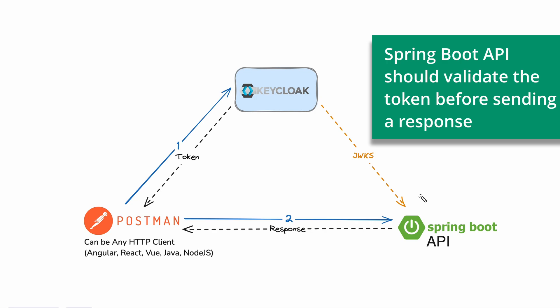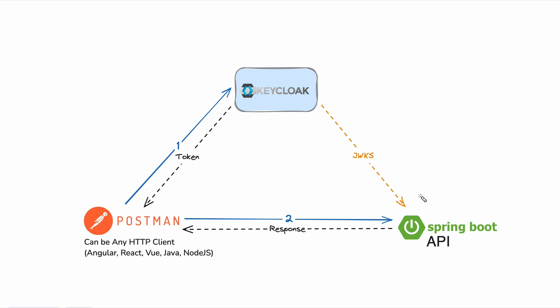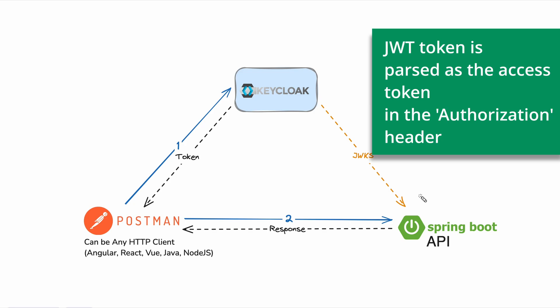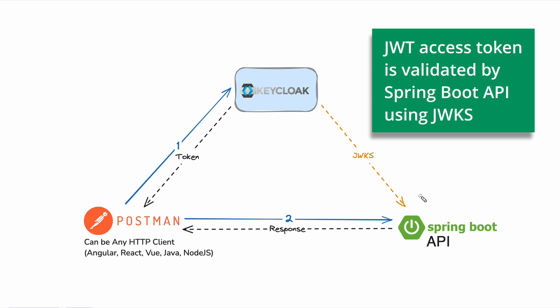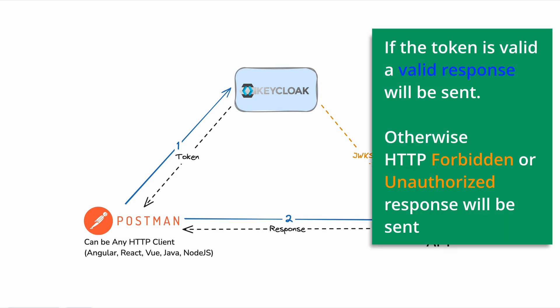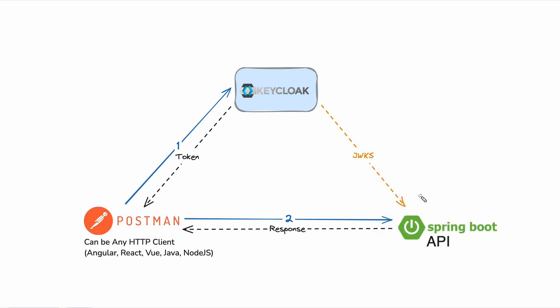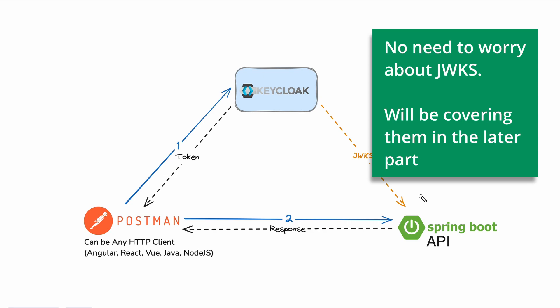In order to validate the access token, the Spring Boot API needs information about the Keycloak server. Normally a JWT token is received as the access token. To validate it, the Spring Boot API communicates with Keycloak and loads its JSON Web Key Set. Using the JSON Web Key Set, the Spring Boot API can validate the access token. After that, if the token is valid, based on the privileges in the access token, the API decides whether the request should be permitted or not. If not permitted, an HTTP 403 Forbidden response is sent.